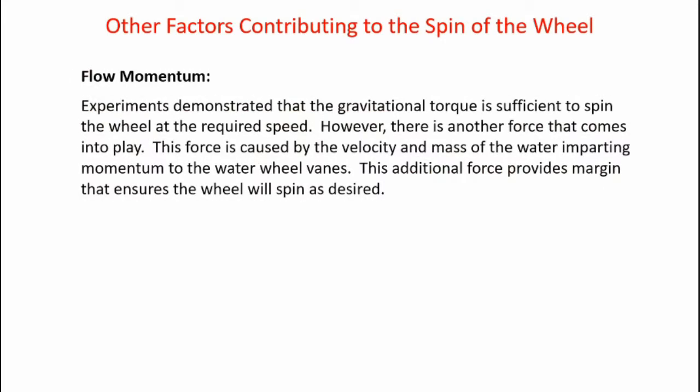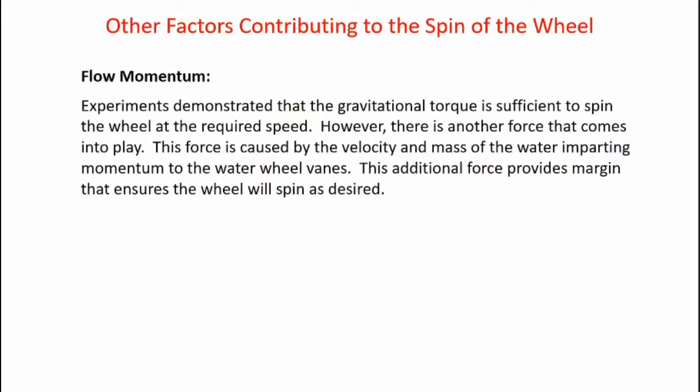The water wheel achieved a velocity that was higher than expected. So what was the cause? Well, first of all, there's flow momentum. Recall earlier experiments that demonstrated that the gravitational torque is sufficient to spin the wheel at the required speed, or at least just barely. However, there's another force that comes into play. This force is caused by the velocity and mass of the water, or the momentum of the water, imparting momentum to the water wheel vanes. It's a lot like taking a hose and squirting a basketball. The stream of water will push the basketball across the ground. This additional force provides margin that ensures the wheel will spin as desired. This force was not accounted for in the analysis.